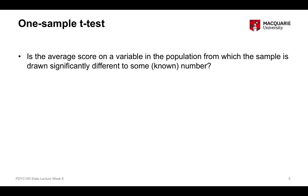The one-sample t-test is looking to see if the average score — the mean score — on some kind of numeric variable, a quantitative variable, in the population from which this sample is drawn, is significantly different to some other mean score on the variable. Some other external mean score.